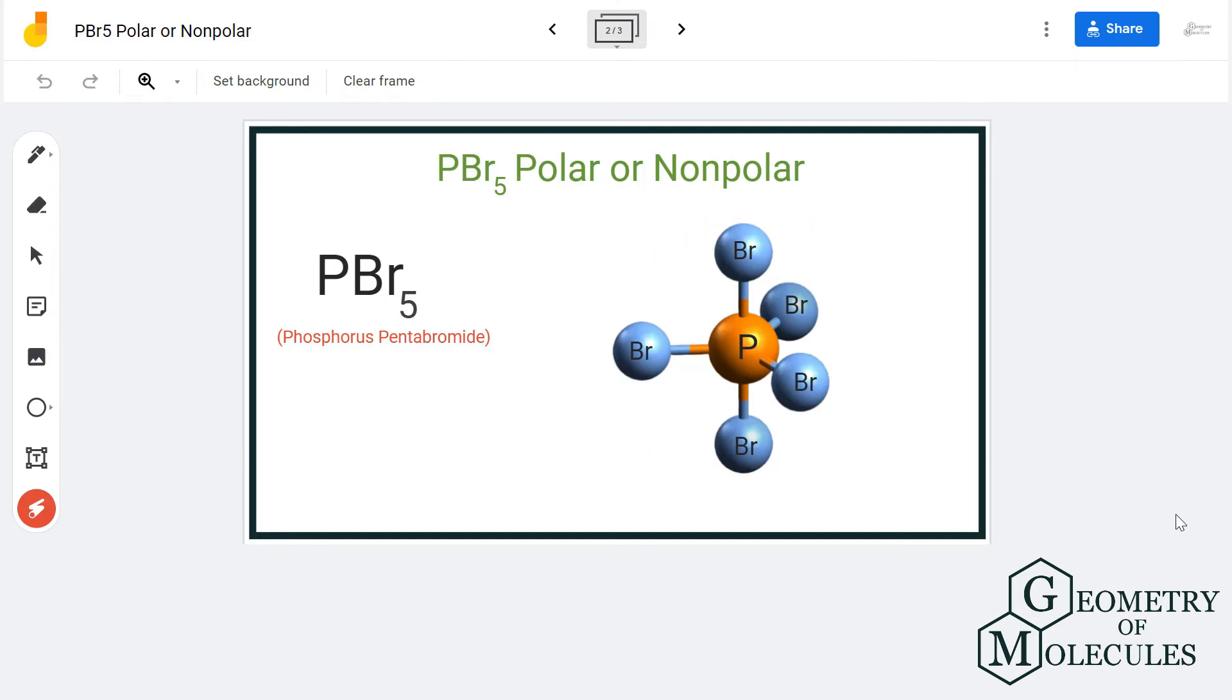So there are chances that this molecule is a non-polar molecule because of the symmetric distribution of electrons. Even if there is a dipole moment in the molecule, it will be nullified due to this symmetric arrangement and as there are no uneven distribution of charges in this molecule.